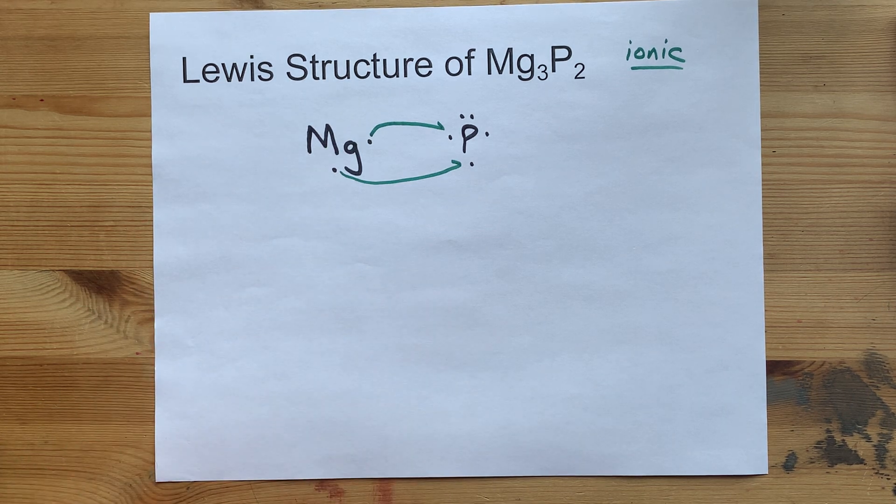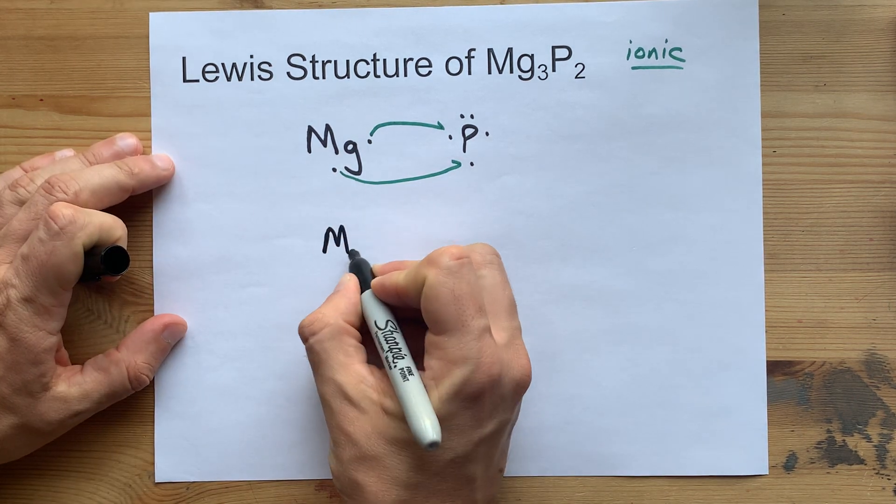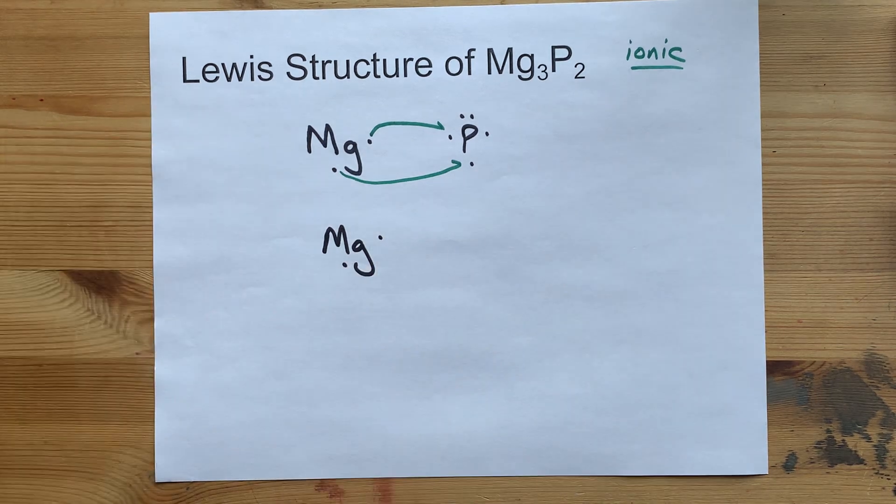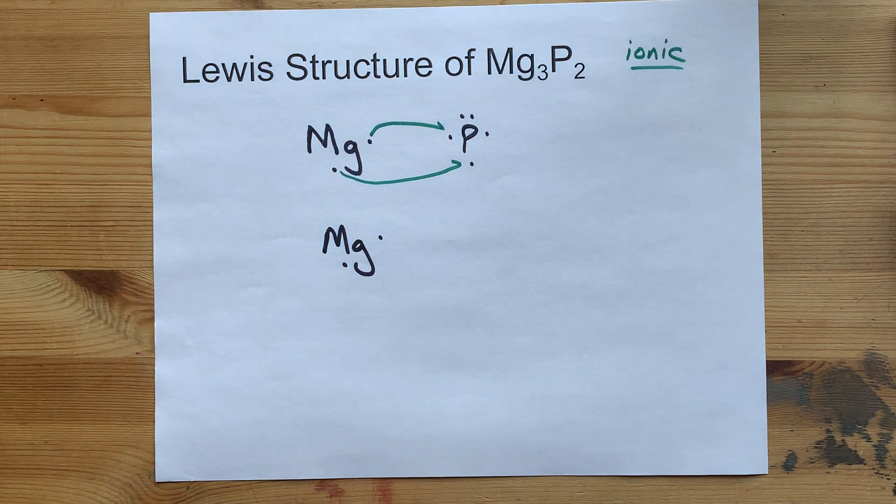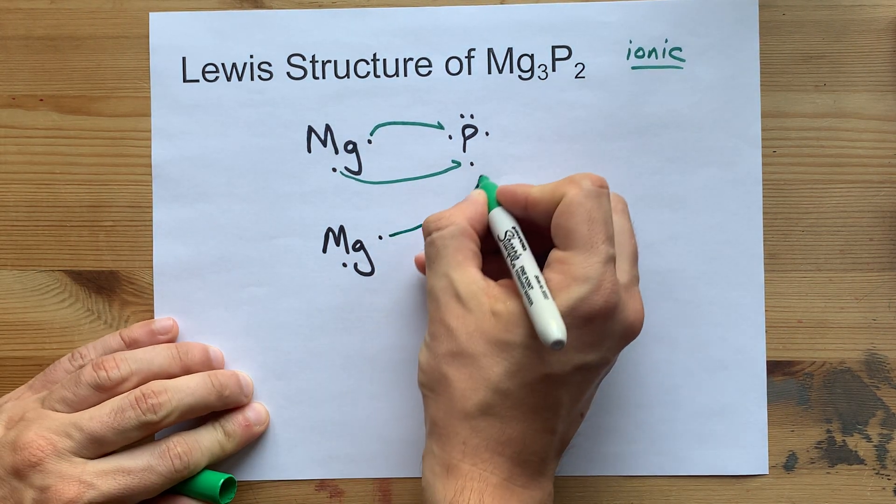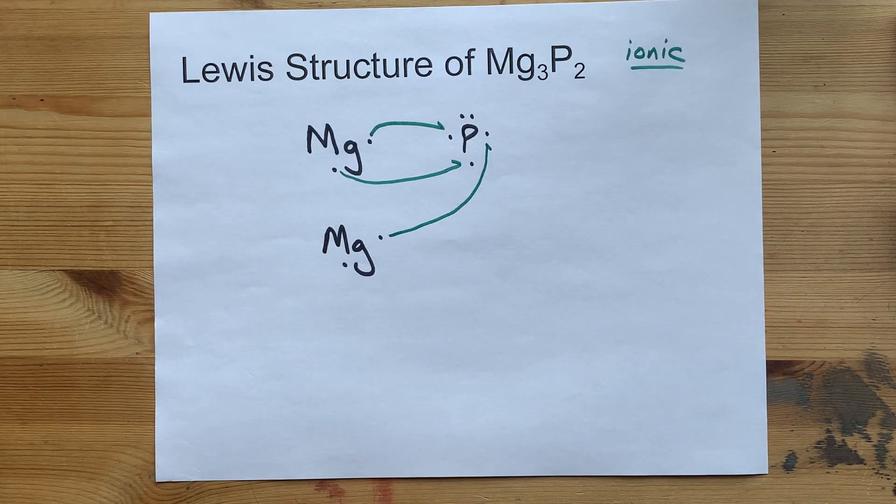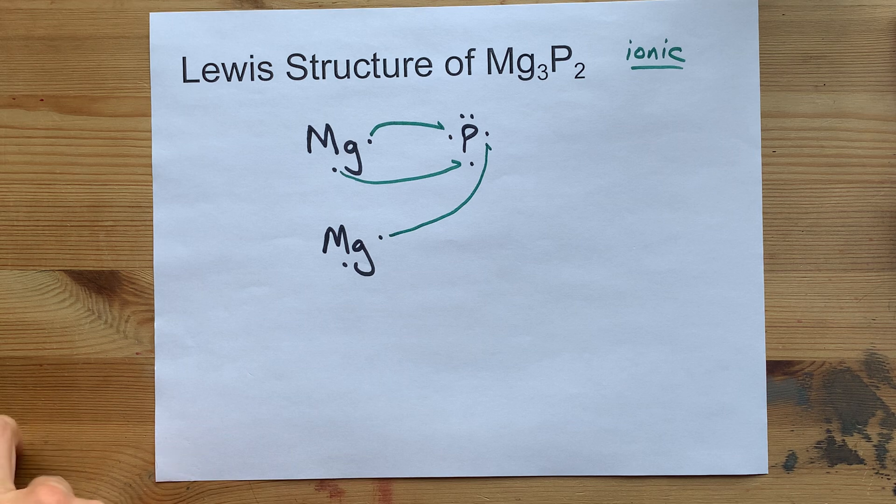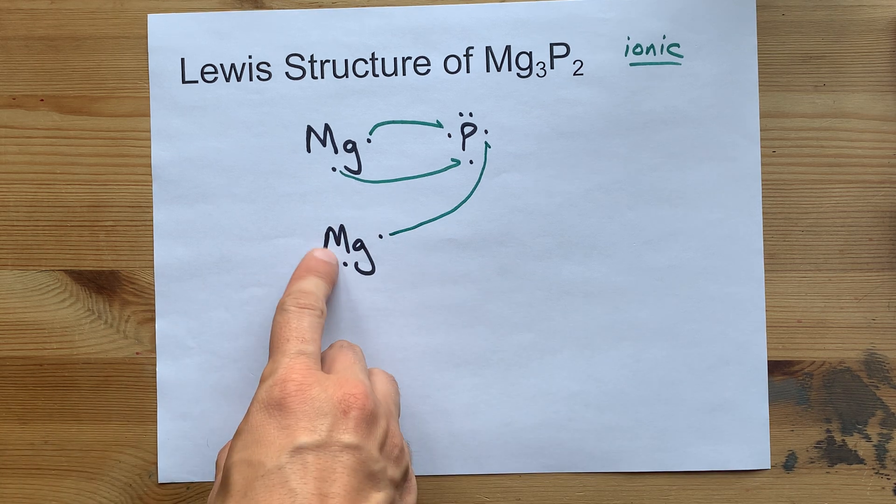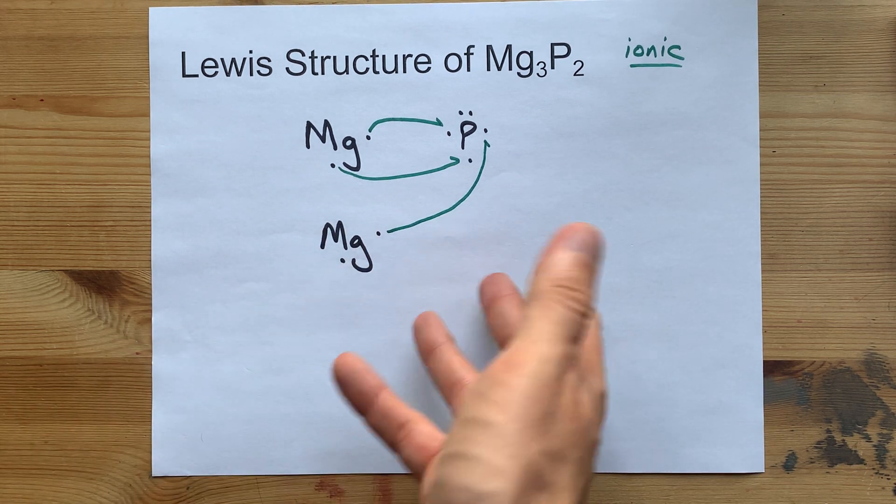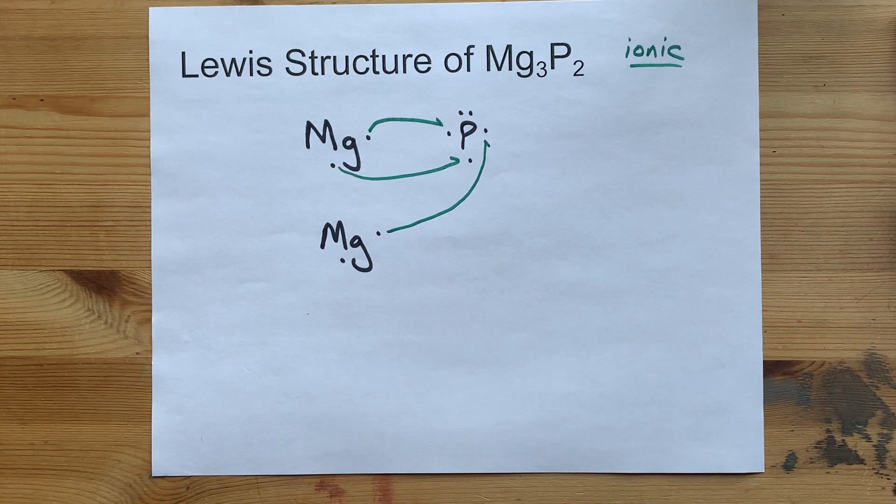So we need another Mg. Mg will bring 2 electrons with it. Give away one of those to this phosphorus. Now that phosphorus is happy. But this Mg is very unhappy. He still has an extra electron. Maybe there's another P to give it away to.